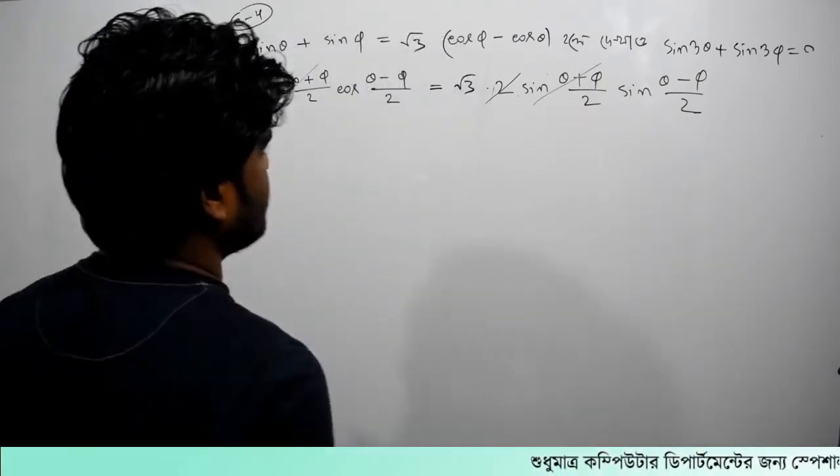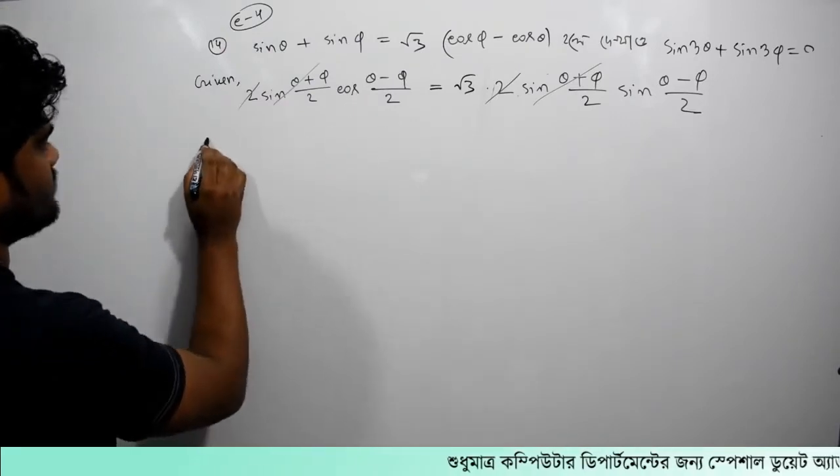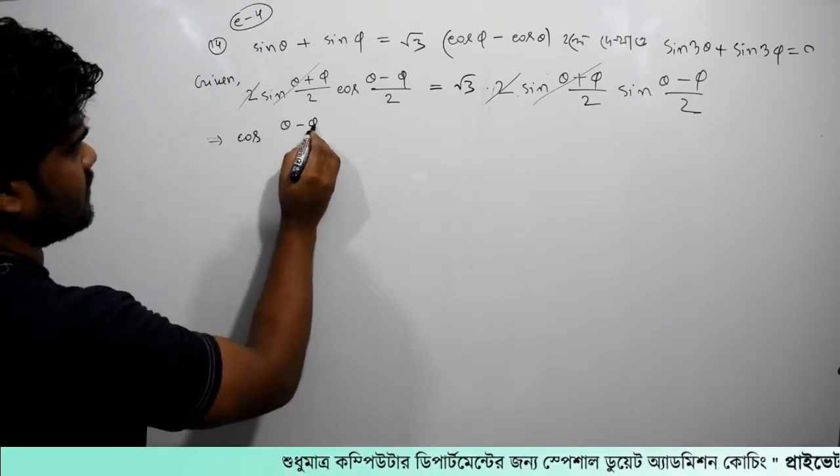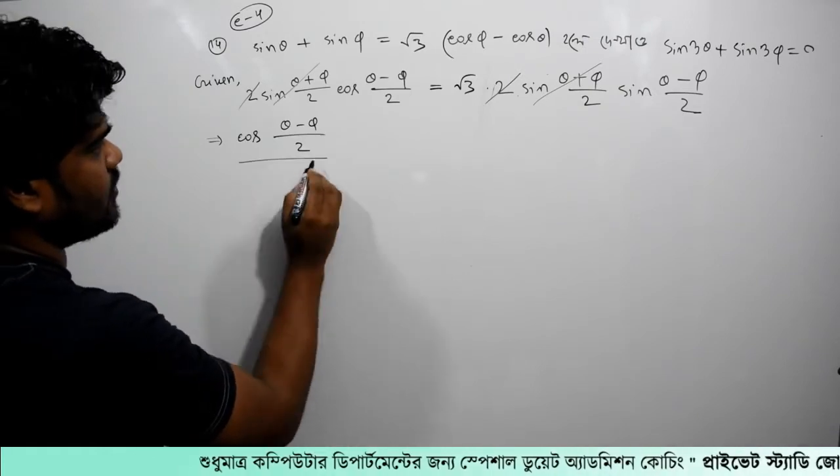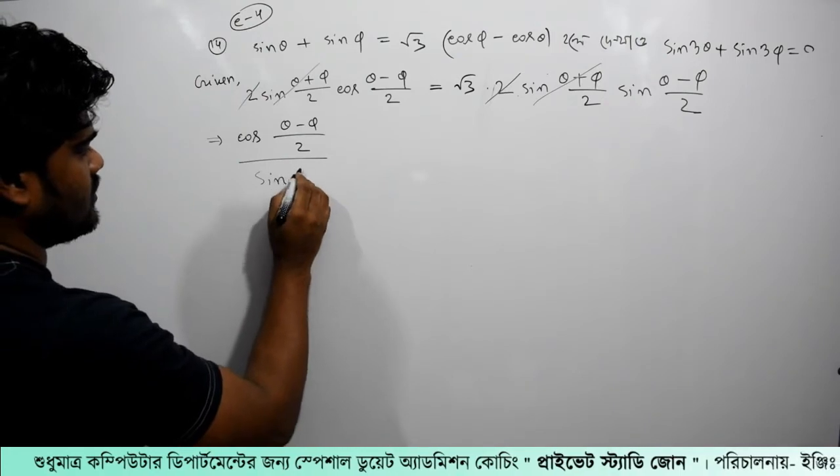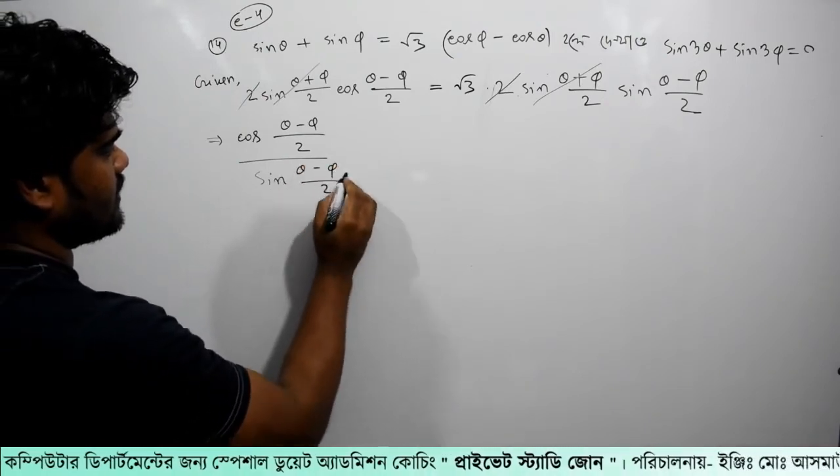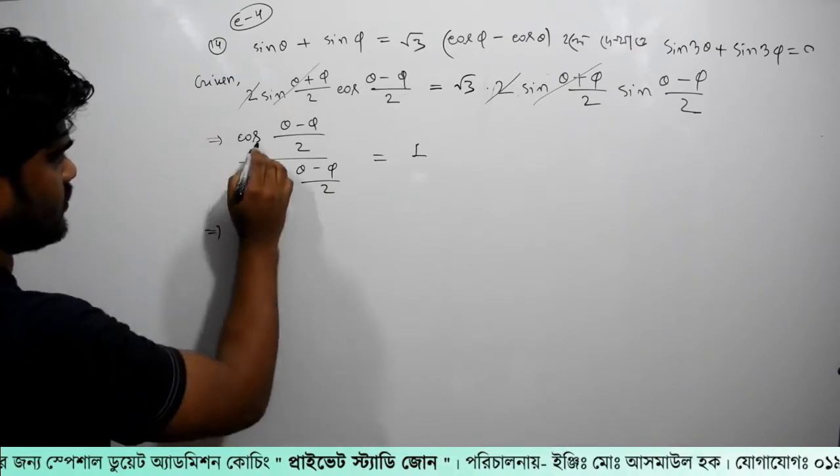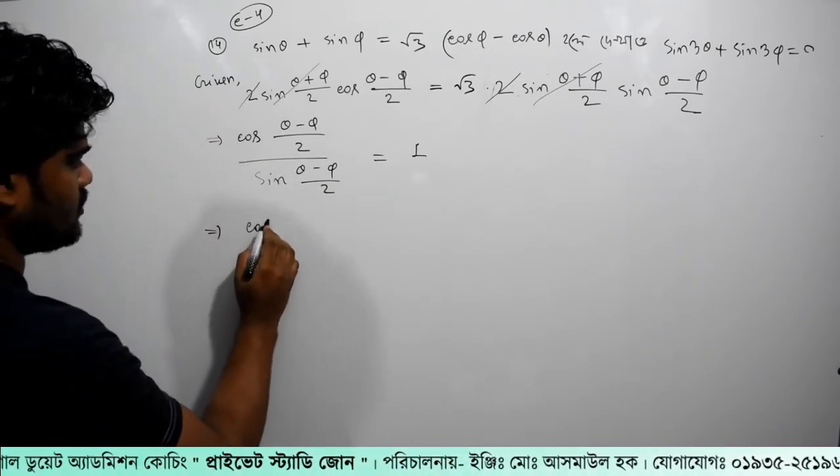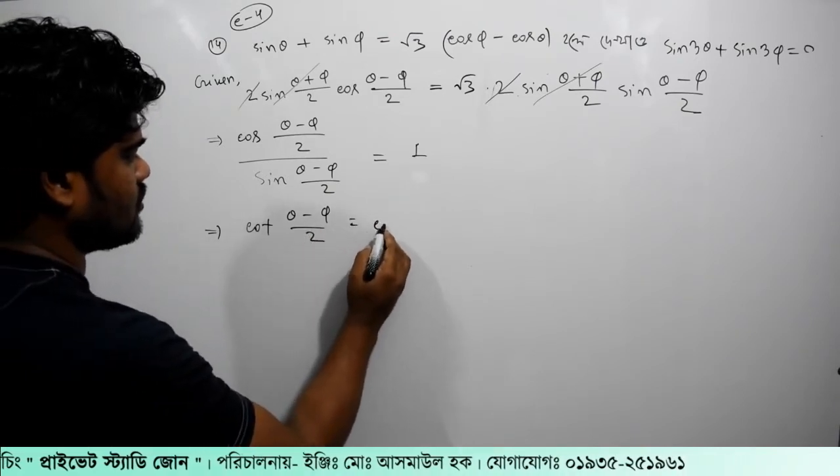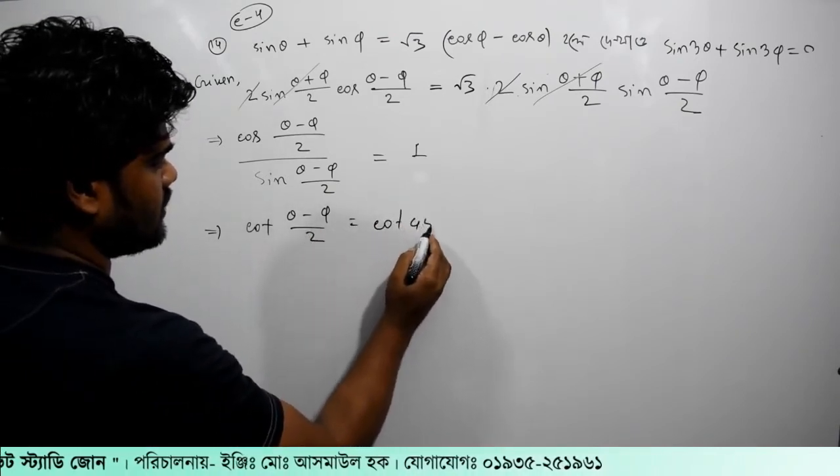So what are we going to do? cos (theta minus phi)/2... Then sin (theta minus phi)/2 equal to 1. So cos (theta minus phi)/2 equal to cos 45 degrees.